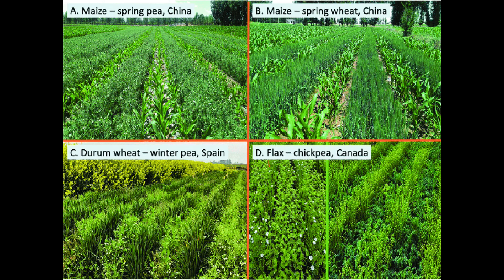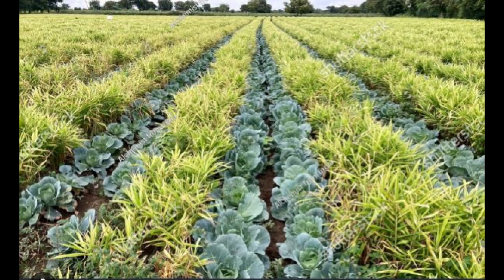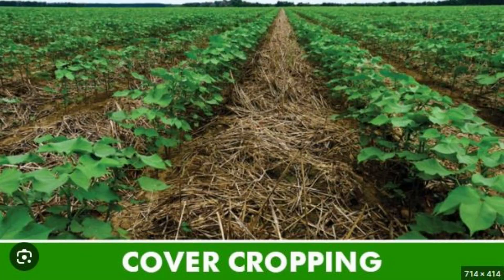Intercropping is growing two or more crops simultaneously in the same piece of land with a definite row pattern. It is the intensification of cropping in time and space.